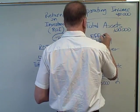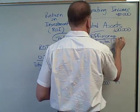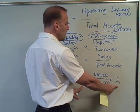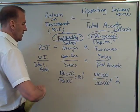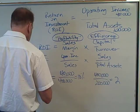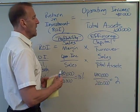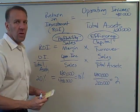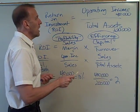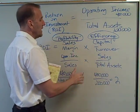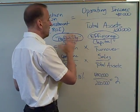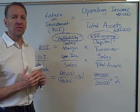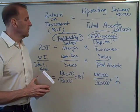Capital turnover is measuring the efficiency of our assets. If we can increase either one of these — sales margin or capital turnover — that will increase ROI. Ten percent times two gets us twenty percent, which is what we calculated previously for ROI. Now I have another way to increase ROI by improving profitability and efficiency. That's the lecture on return on investment — we use this to evaluate investment centers.